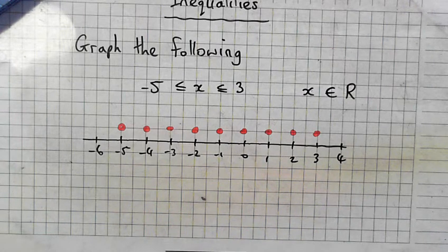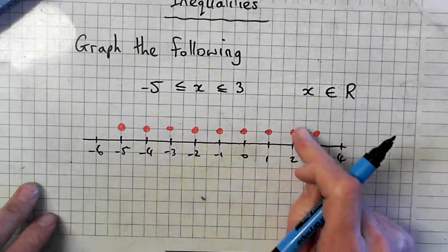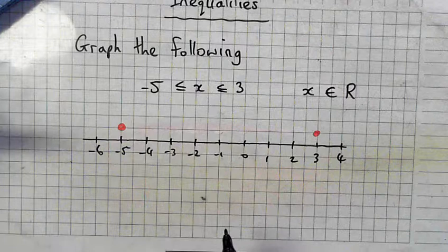Is that correct? I drew dots the whole way across. Is that right? No. R means? A line. R means everything in between.